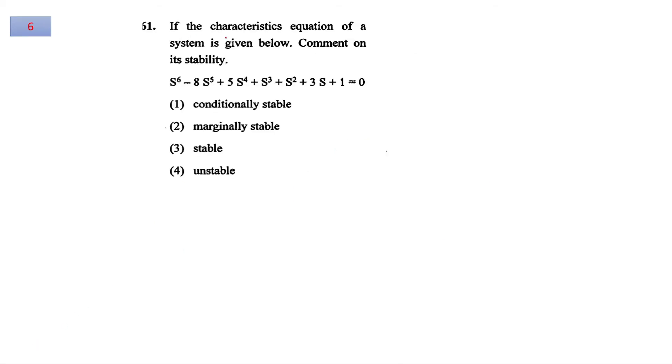For question number 6, if the characteristic equation of a system is given, we have to comment on the stability. As a short trick, you should always know that for a system to be stable, the characteristic equation must have all the signs as similar. If you observe, you are having a negative sign, so you can directly comment, you can directly write the answer: system is unstable.